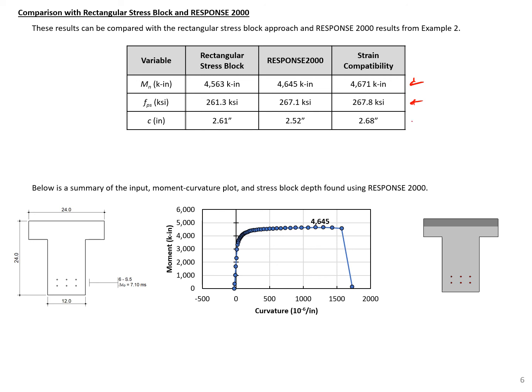And our c is again a little higher, but still close to what we would get with the rectangular stress block or response 2,000. So you can see here again some of our analysis results from response 2,000 showing us the compression block depth still in that top flange and then our moment curvature response, which gives us some idea about the ductility and performance of the section. So that concludes this example.